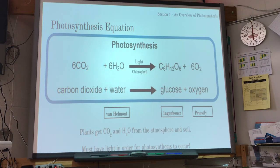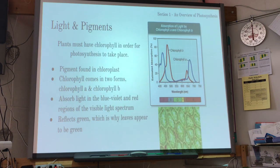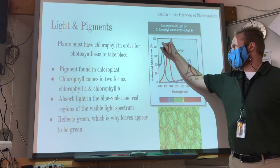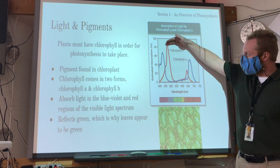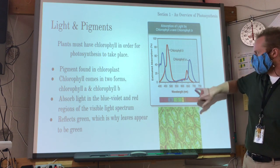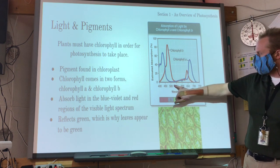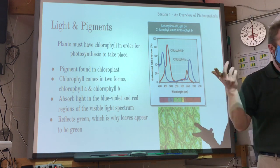To summarize the scientists' contributions: Van Helmont said plants need water; Ingenhaus showed they produce glucose and need light; and Priestley showed plants give off oxygen. This is how they built up the equation for photosynthesis.